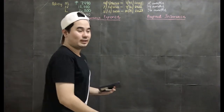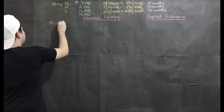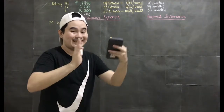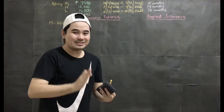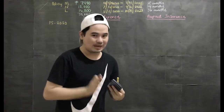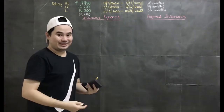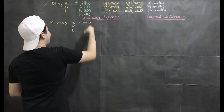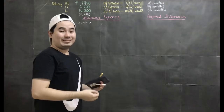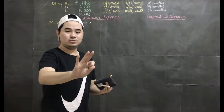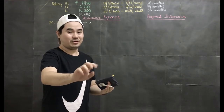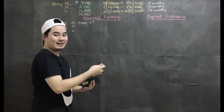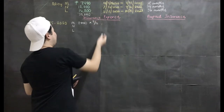Now we're ready to solve for the insurance expense and prepaid insurance for each year affected. Let's start with the financial statements for 2020. For each policy, we check how many months it was used during 2020. For Policy M — 7,440 — it started in April. So April, May, June, July, August, September, October, November, December — that is 9 months. So our multiplier is 9 over 12.